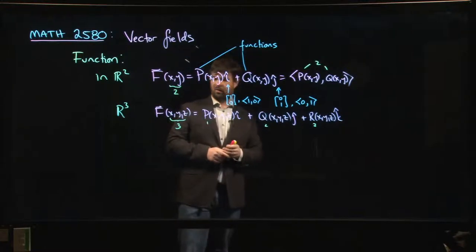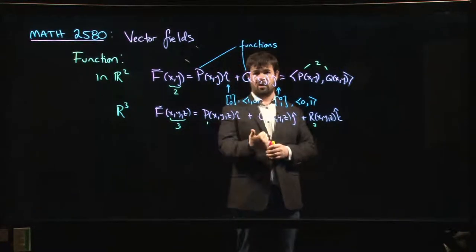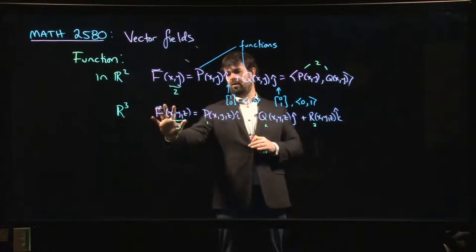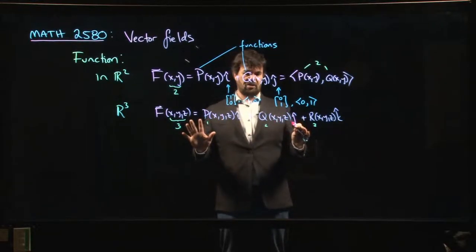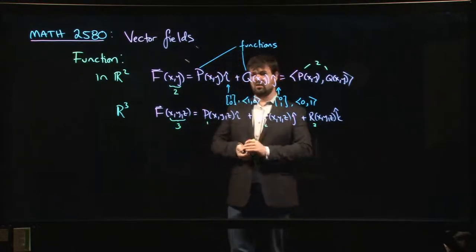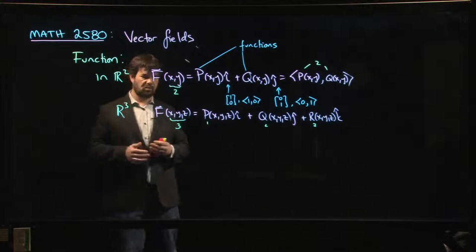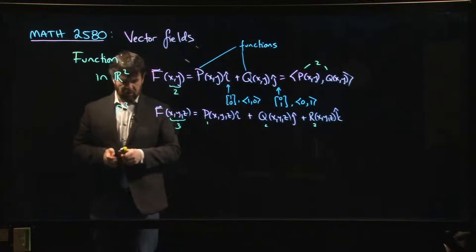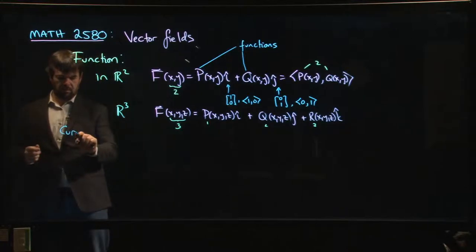In R² we're taking points from R² and producing vectors in R². In R³, points from R³ produce vectors in R³. This is not like a vector parameterization for a curve where you take an input in R¹ and output in R² or R³. Here the dimension for the domain and codomain has to be the same.